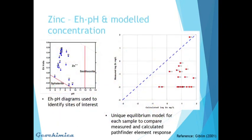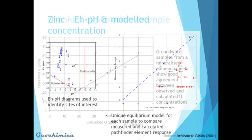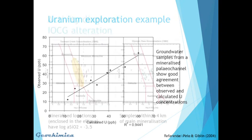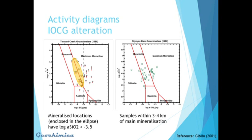This diagram, taken from Angela Giblin, shows samples plotted on an Eh-pH diagram. We can see around four samples which plot in Eh-pH space close to the sphalerite stability field. If that's taken a step further and added into a computerized groundwater equilibrium model, we can see that there's one sample which plots on the tie line between the measured zinc concentration and the calculated zinc concentration — a powerful tool for working out whether your sample has come in contact with concealed mineralization. As a quick uranium example, these samples were taken from a mineralized paleochannel, and we got really good agreement between observed uranium concentrations and what we would calculate the groundwater to hold.